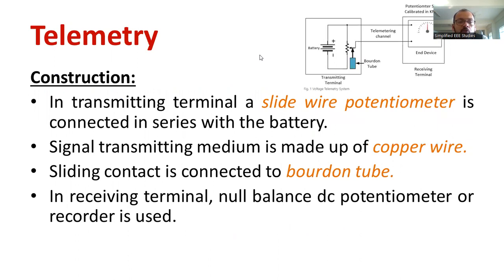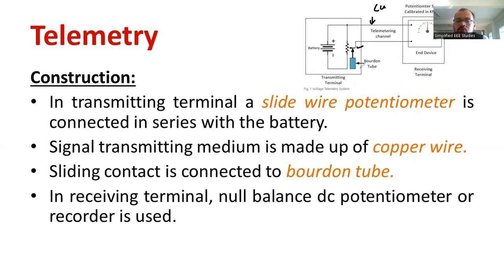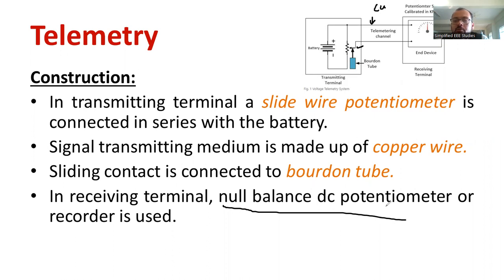The major construction component is a slide wire — the slide wire I already showed you. The signal transmitting media is copper wire. The sliding contact is connected with the burden tube because, with respect to changes in the physical system, the burden tube gets activated. As the pressure changes, the burden tube also changes. At the receiving end side, there is a null-balanced DC potentiometer which is calibrated in terms of pressure — kilo Newton per meter square. A recorder can also be used.